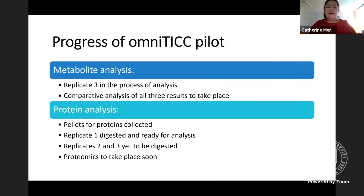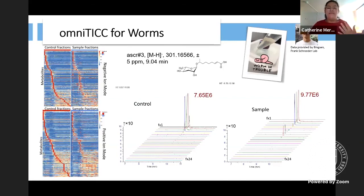So the progress right now of OmniTIC is for the metabolite analysis. Replicate 3 is in the process of being analyzed. And then we plan on comparing all three replicates for a better comparative analysis for the results. Additionally, protein analysis is kind of stalled at the moment. The pellets are already collected and replicate 1 is digested and 2 and 3 need to be digested. However, in the future, the goal is to perform proteomics on these samples to better understand and look for target PMIs. But for the moment, we're working on this side project with Frank's lab.